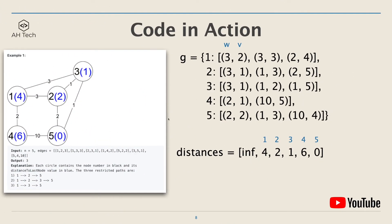For example 1, with the given input edges we generate the graph hash map. In the hash map, the key is the label of each node, and the value is the adjacency list where each item is a tuple: the first item is the edge weight and the second item is the neighbor node.